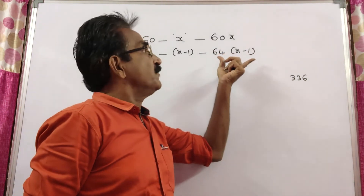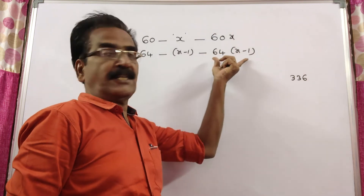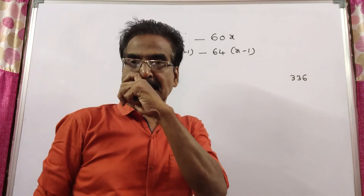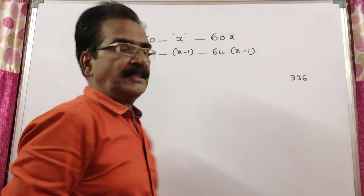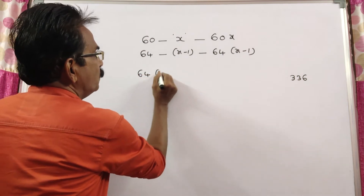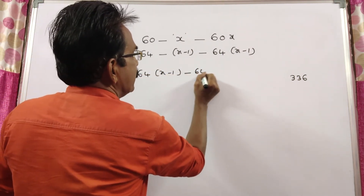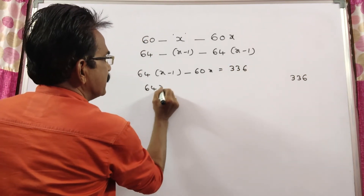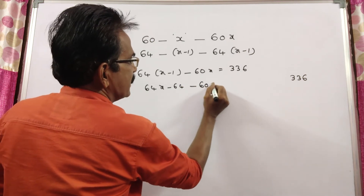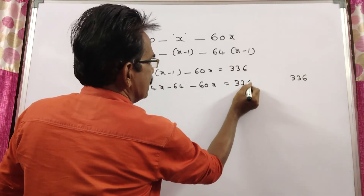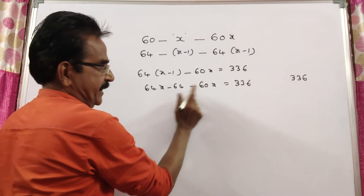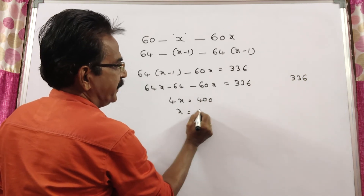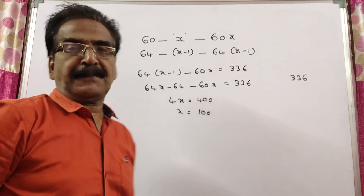64 into (X minus 1) is the cost of 64 books, and 60X is the price of 60 books. The difference is the price of 4 more books, which is given as 336. So: 64(X minus 1) minus 60X equals 336. That gives us 64X minus 64 minus 60X equals 336, so 4X equals 400, and X equals 100 rupees — that was the earlier average price of each book.